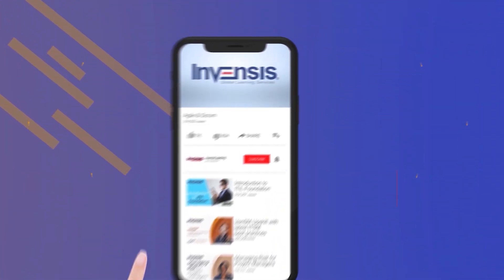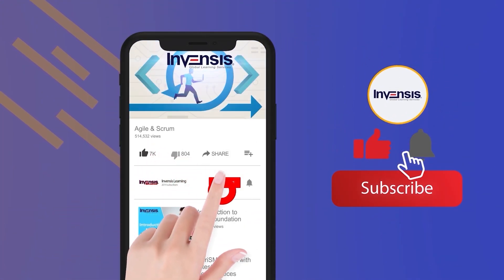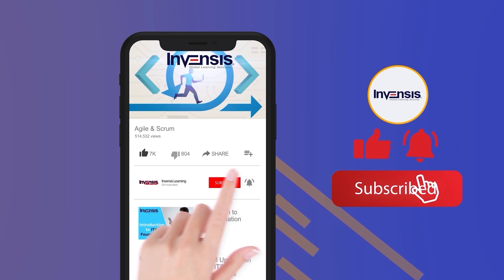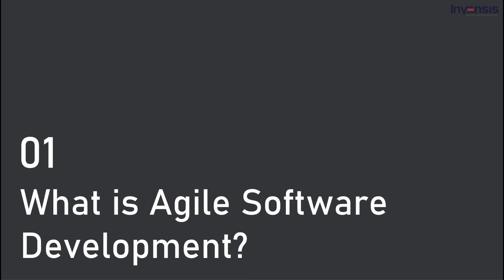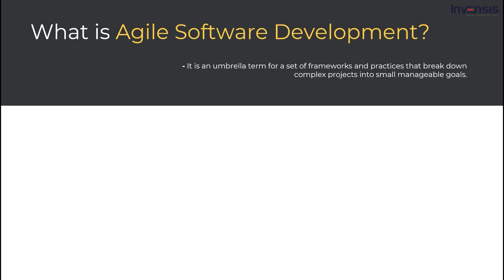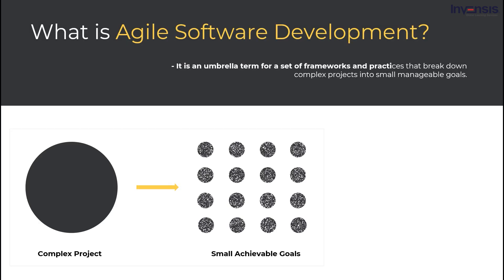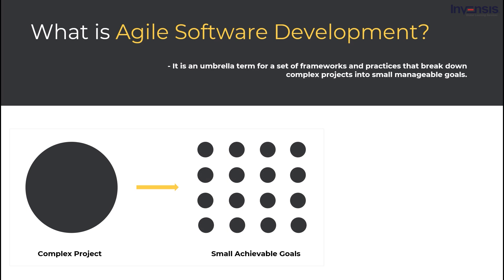While you are here, please do subscribe to the Invensis Learning YouTube channel to stay updated with trending technologies and view more content on other interesting topics. So, to kick things off, let us start with what exactly is Agile software development. Agile software development is an umbrella term for a set of frameworks and practices that break down complex projects into small manageable goals. You are working towards these goals while adding new goals based on requirements and customer feedback. One of the main benefits of this approach is the ability to adapt and change at any step depending on feedback, market conditions, corporate obstacles, and to supply only relevant products to the market.